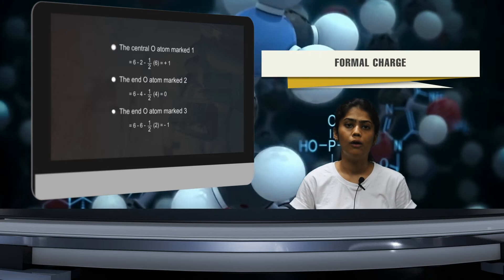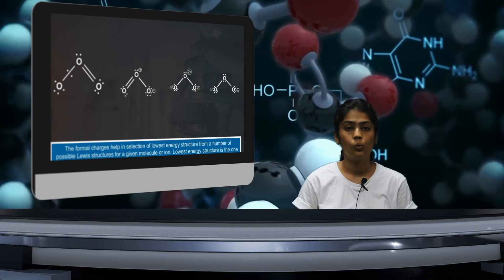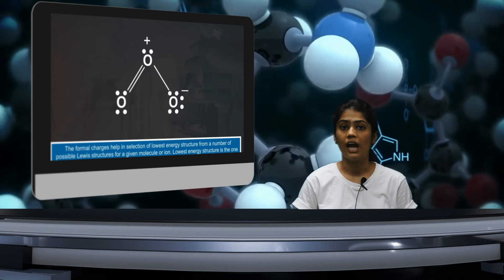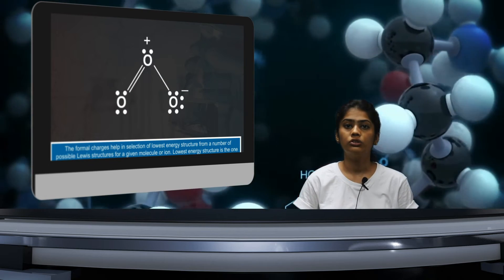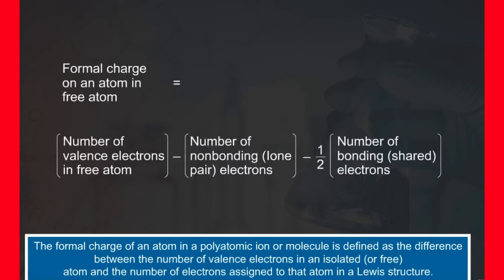We have studied about covalent bond. Now, we will be looking at the formal charge. What is charge? How do they take part in chemical reactions? And why do we need to study charge? Formal charge: The formal charge of an atom in a polyatomic ion or molecule is defined as the difference between the number of valence electrons in an isolated or free atom and the number of electrons assigned to that atom in a Lewis structure.